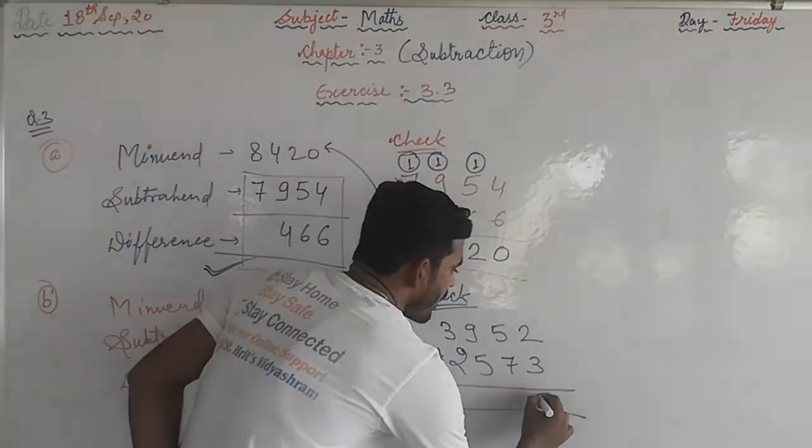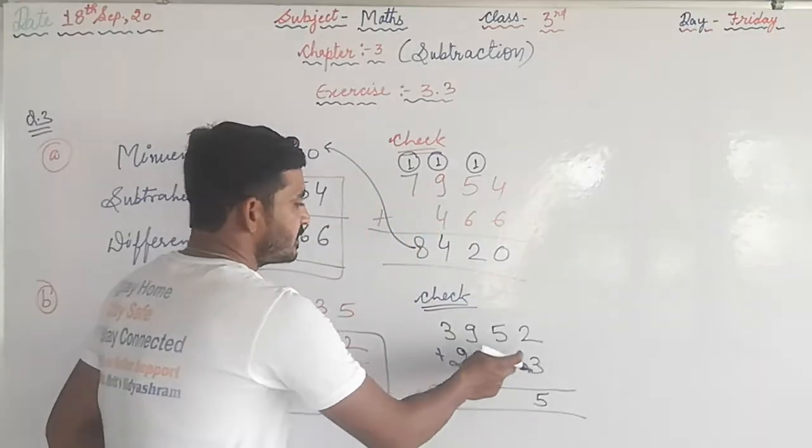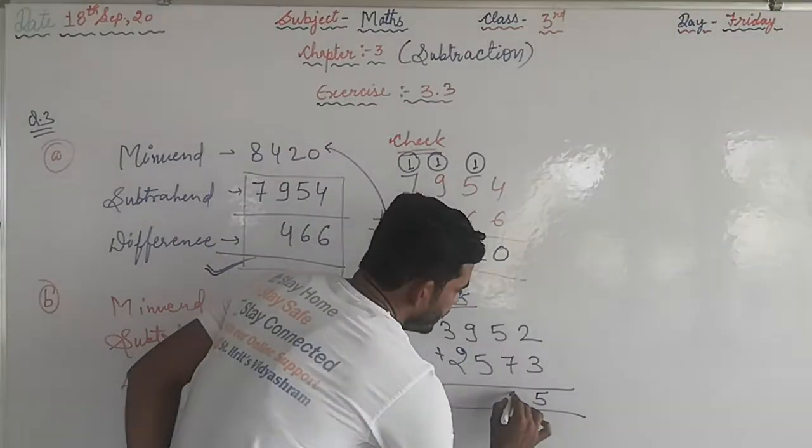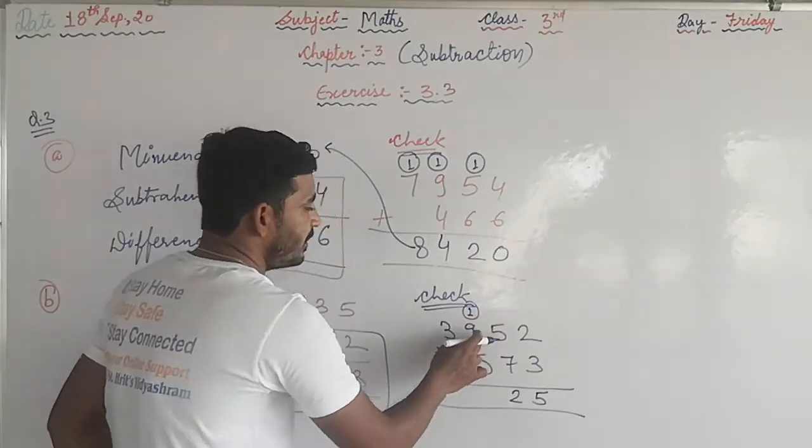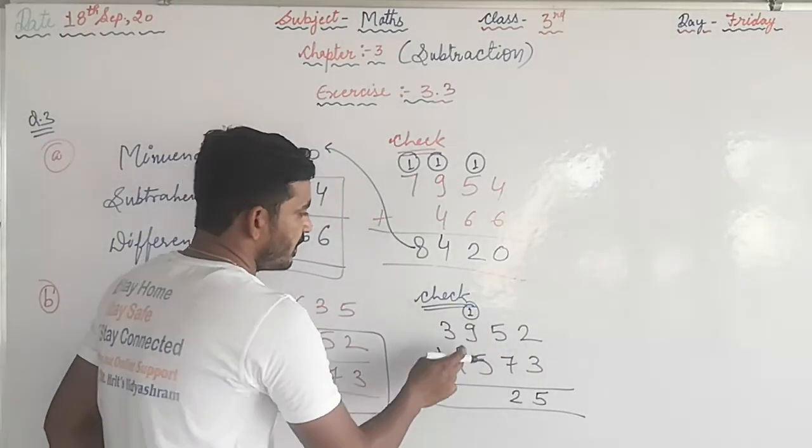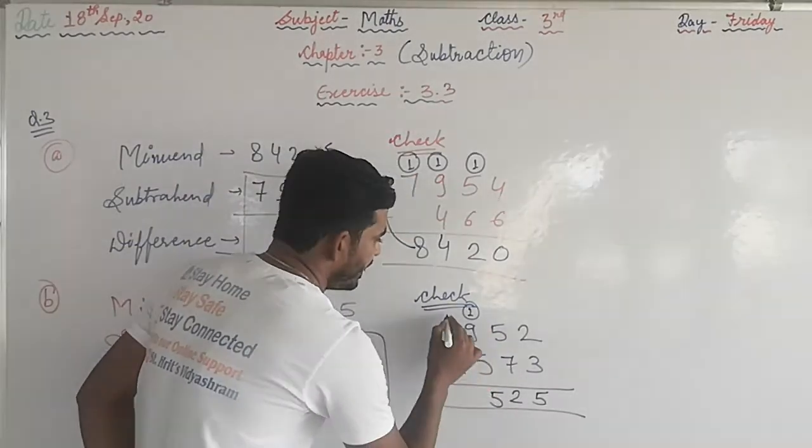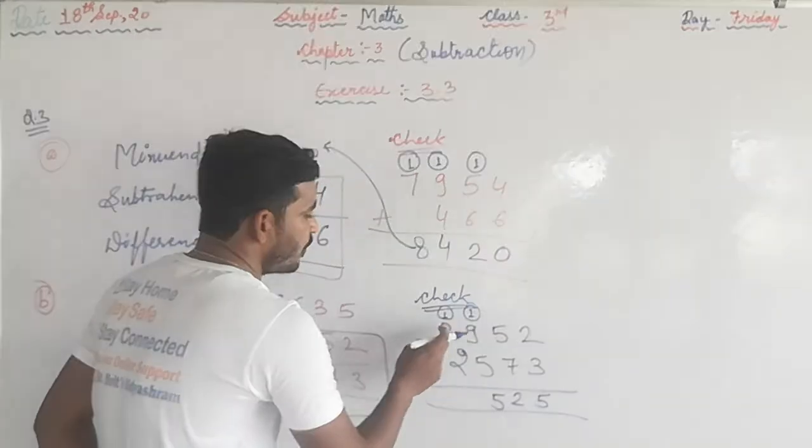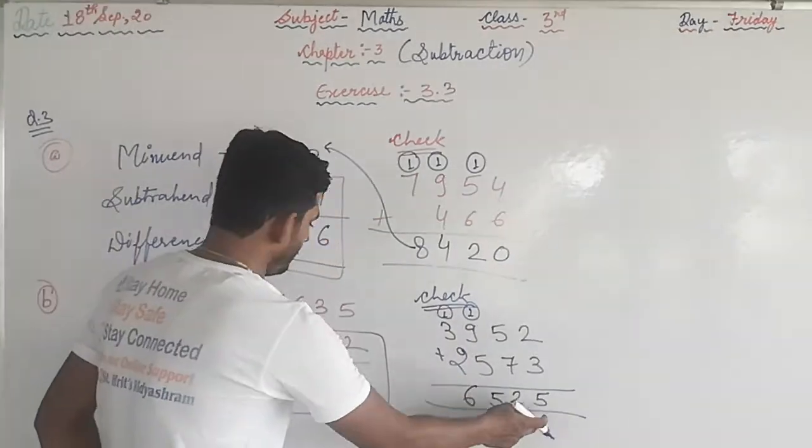3 plus 2, 5. 7 plus 5, 12, write 2 carry 1. 9 plus 1, 10, plus 5, 15, write 5 carry 1. 3 plus 1, 4, plus 2, 6. 6525.